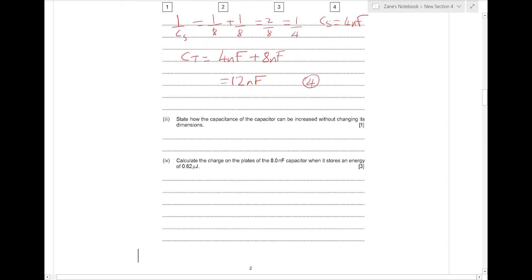Next, we're asked to state how we can increase the capacitance without changing its dimensions. That means we can't change anything to do with the sides. But if we think back to the parallel plate formula where we have epsilon 0 because there was a vacuum or air between the plates, we can simply increase the capacitance by adding a dielectric, maybe a piece of plastic or something between the plates.